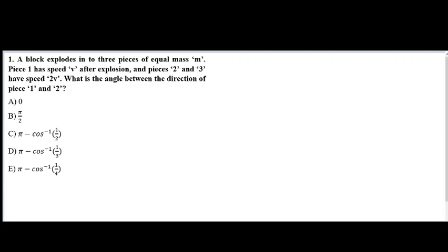Let's start with a block of arbitrary mass m which explodes into three pieces. Suppose this is piece 1, this is piece 2, and this is piece 3. All these pieces have equal mass m, and piece 1 is moving with velocity v, while piece 2 and piece 3 move with velocity 2v after explosion.